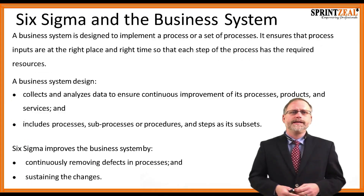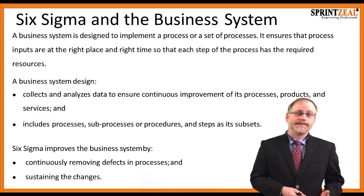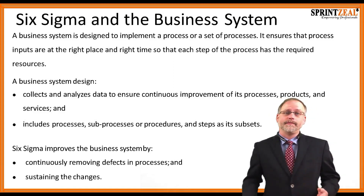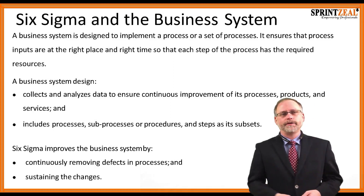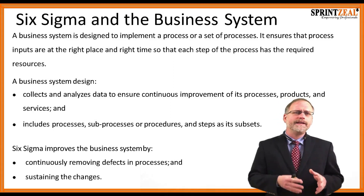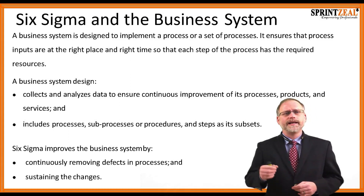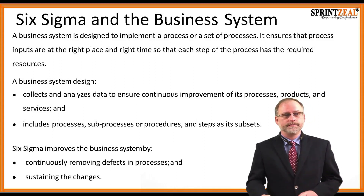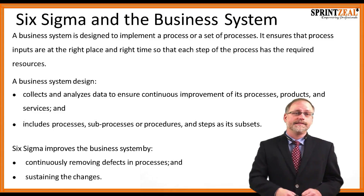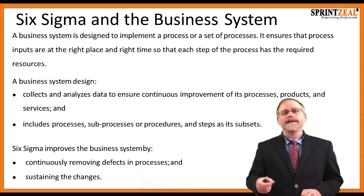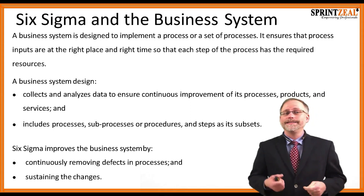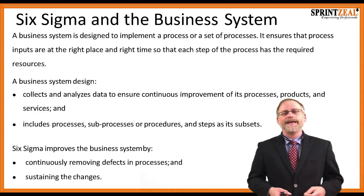A business system is defined to implement a process or set of processes. It ensures that process inputs are at the right place and at the right time, so that each step of the process has the required resources. A business system is designed to collect and analyze data to ensure continuous improvement of its processes, products, and services, and it includes processes, sub-processes or procedures, and steps within its subsets. Six Sigma improves business systems by continuously removing defects within the process and sustaining those changes.